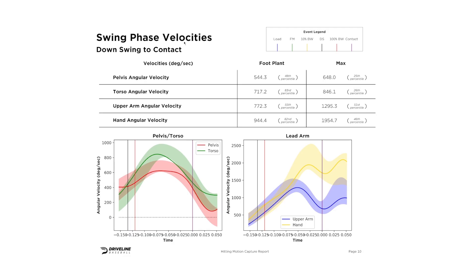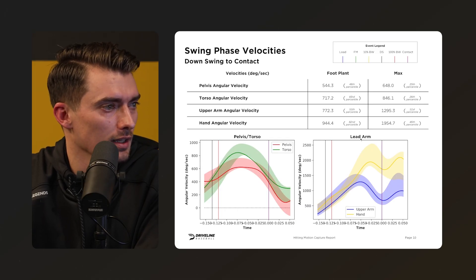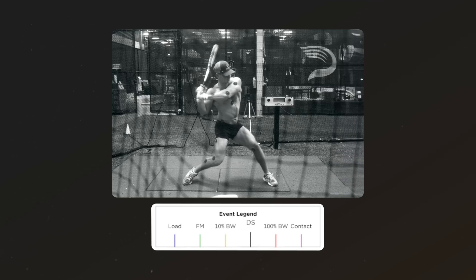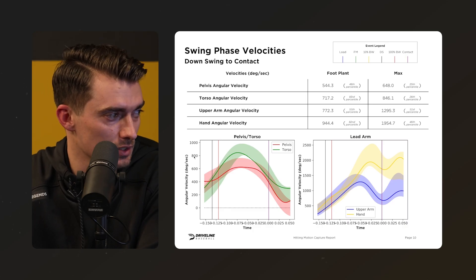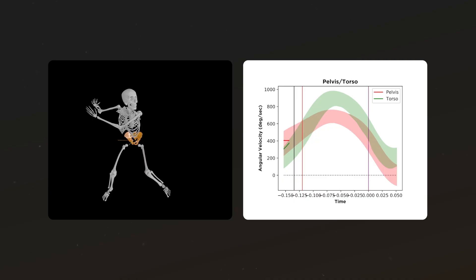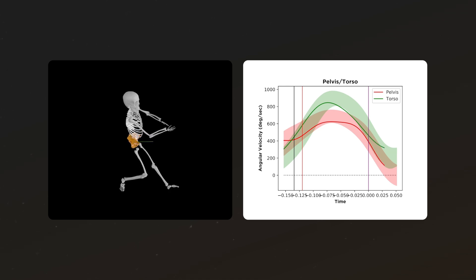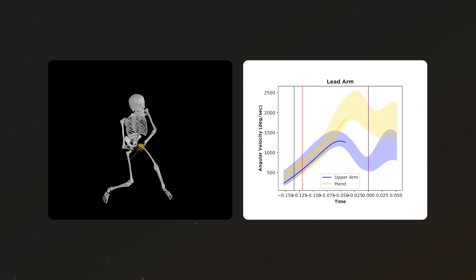Now deeper into swing phase velocities, specifically from downswing to contact. This shorter window is very valuable because the barrel is actually working through space here, giving strong signal for how body speed is created, how it transfers into the bat, and ultimately how it impacts contact quality. In the proximal segment graph, you want to see the pelvis accelerate first and then the torso gain speed on top of that. On the lead arm and hand graph, you want the arm to accelerate and then hand speed to build on top.